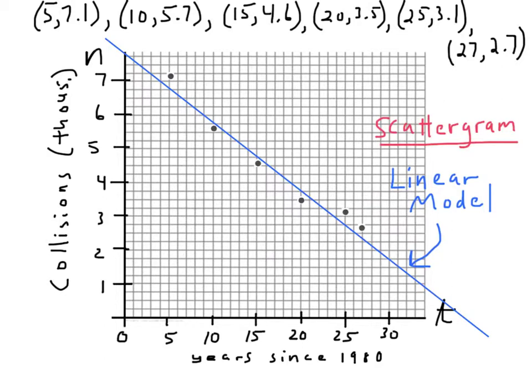Now, one thing we'd like to be able to use a model for is to be able to estimate one variable when we know what the other one is. For example, let's say we wanted to estimate the number of collisions in the year 1993. Now, first we have to locate where 1993 is on this horizontal axis. Remember, t equals 0 represents 1980. So, we would have to go up to 13, which is right about here. And then what we'd have to do is kind of extend straight up. I usually put these in with dotted lines, until we touch the graph. And then, wherever we touch, then we'll go over and see where it touches the vertical axis. And it looks to me like it would be right about 5,250.